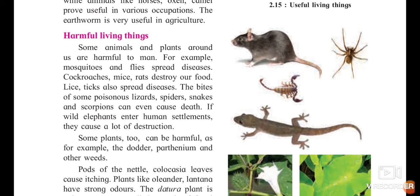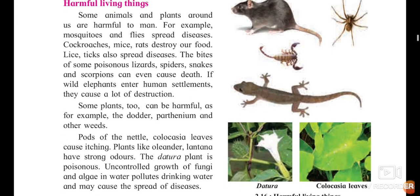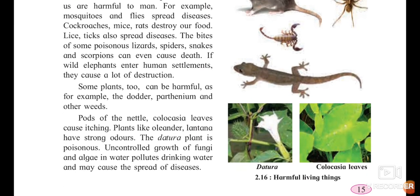Some plants too can be harmful. For example, the dodder plant, parthenium, and other weeds — which are small plants — are also harmful. Pods of the nettle and colocasia leaves (arbi/aruchipana) cause itching. Plants like oleander and lantana have a very strong odor you cannot even smell. The datura plant, whose flower you can see here, is also poisonous.